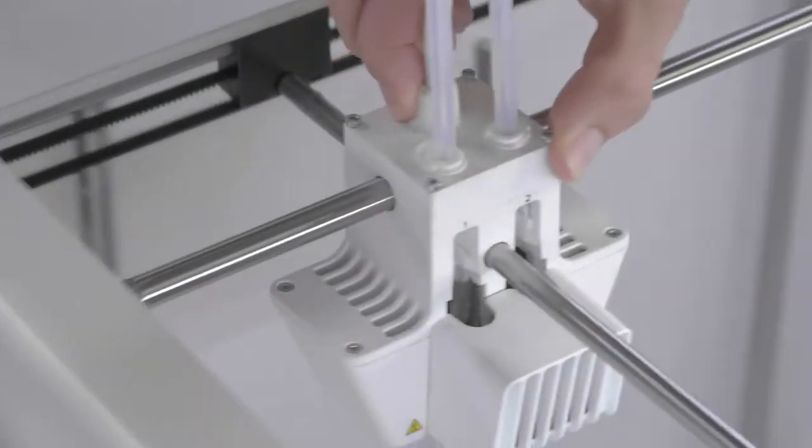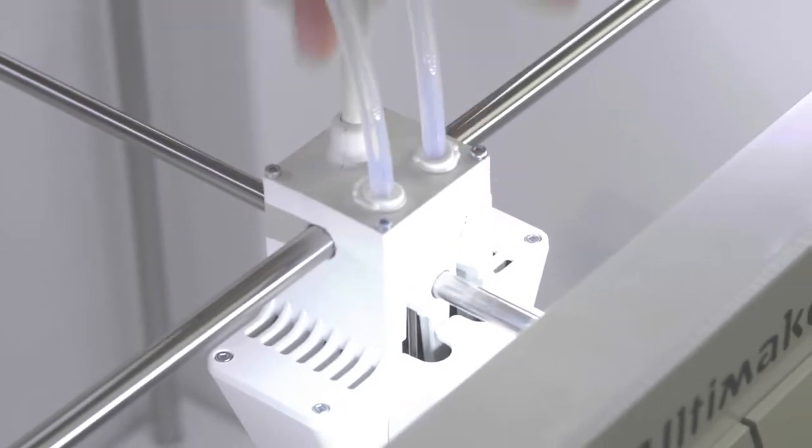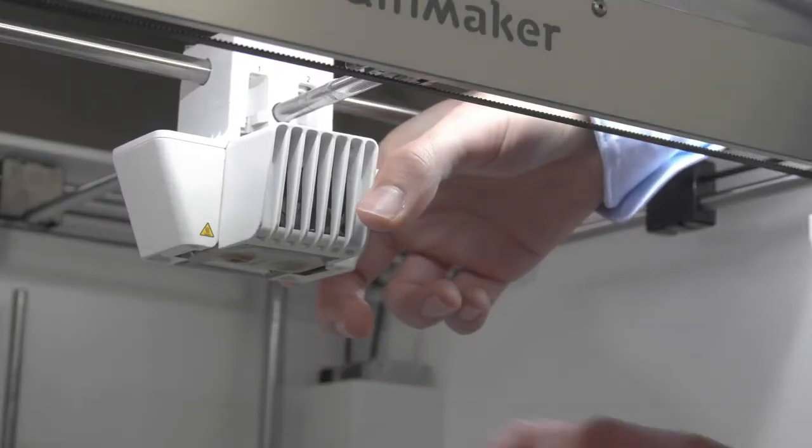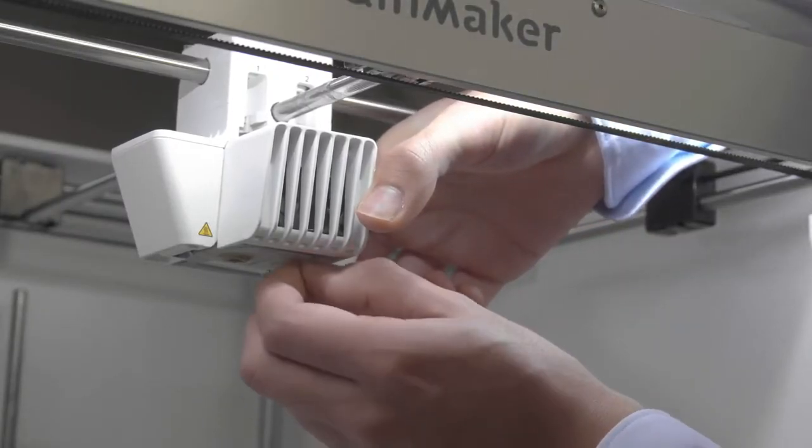Position the printhead at the front of the printer. Hold the front fan bracket closed. Pull the cover away from the printhead and throw it away.